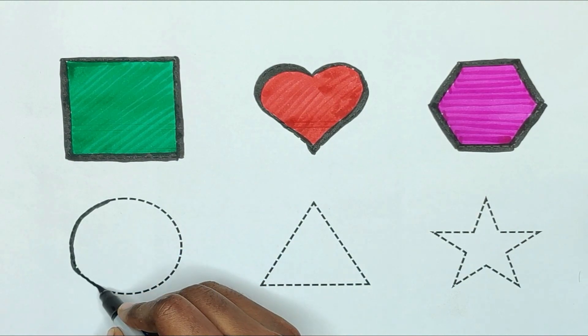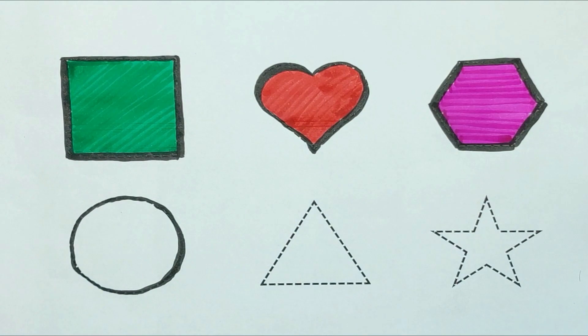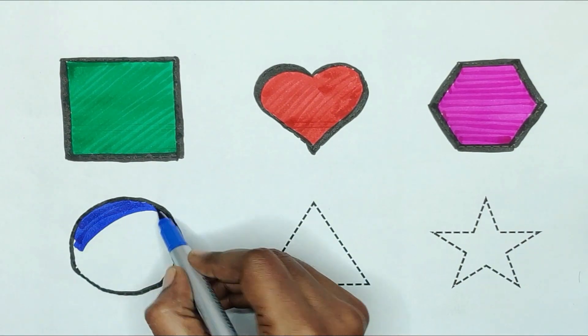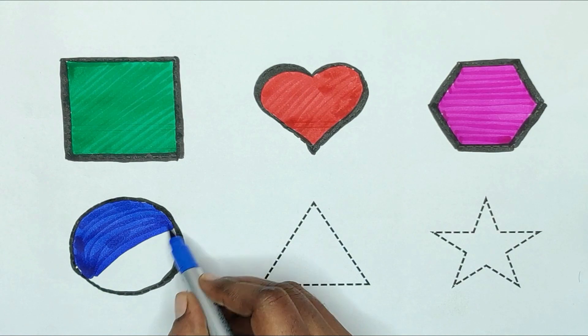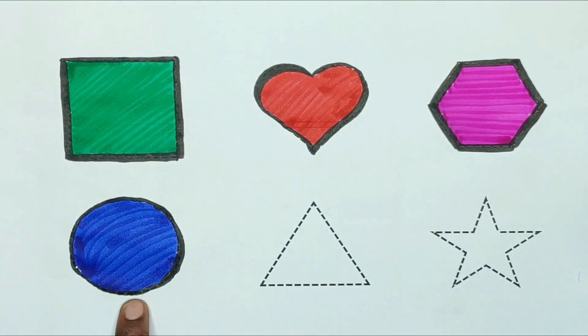Next, circle. The shape is circle. Blue color. Circle shape is blue color.